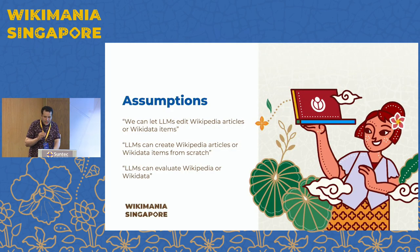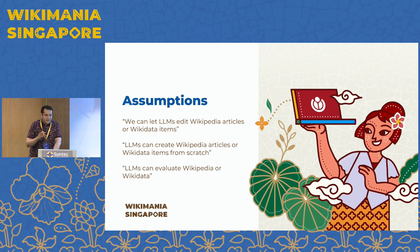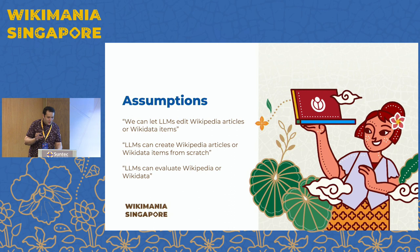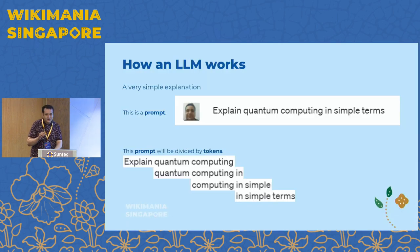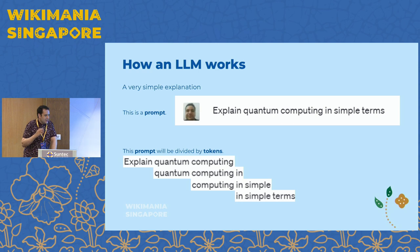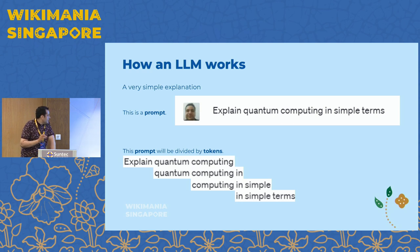The main assumption I have seen around is that we can let LLMs edit Wikipedia and Wikidata, create Wikipedia and Wikidata items from scratch, and evaluate Wikipedia or Wikidata. Well, this is not true — at least for the moment. A very simple explanation of how LLMs work will show you that LLMs are not reliable enough to let them take the lead.